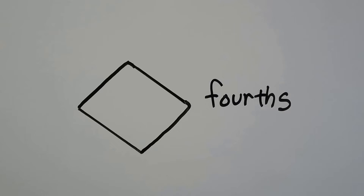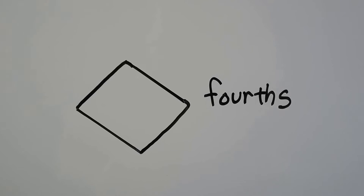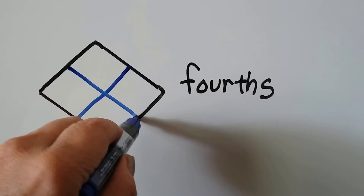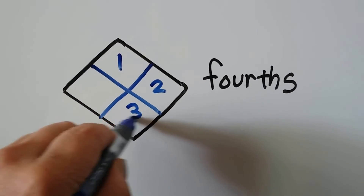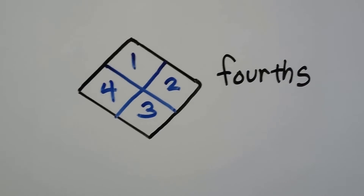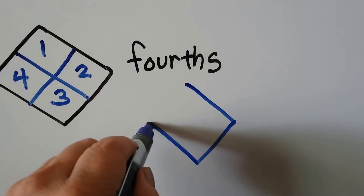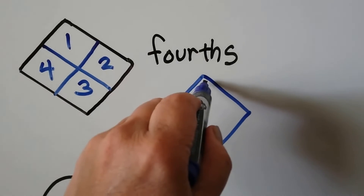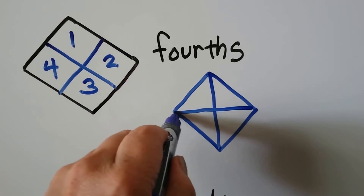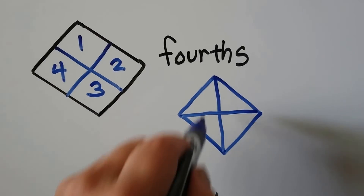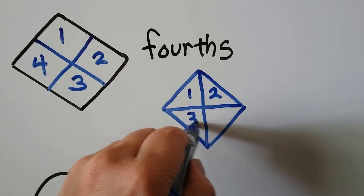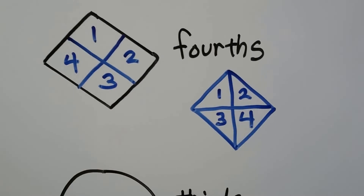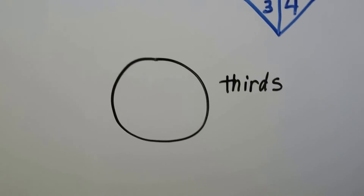What if we wanted to make fourths for this diamond shape? We could make an X inside it and have one, two, three, four equal parts. How else could we do it? We could draw a plus sign. So we could make four equal parts with an X inside it, or with a plus sign inside it — either way makes four equal parts in a square or diamond.